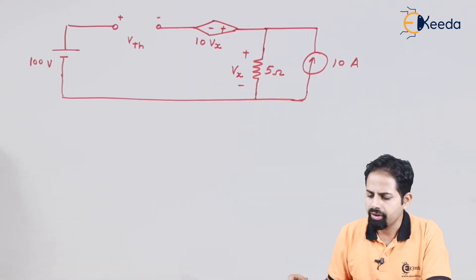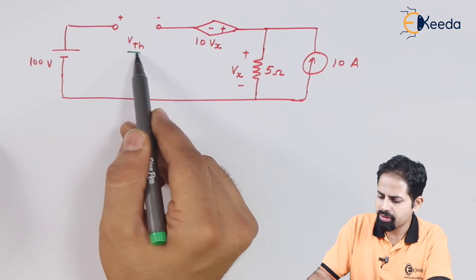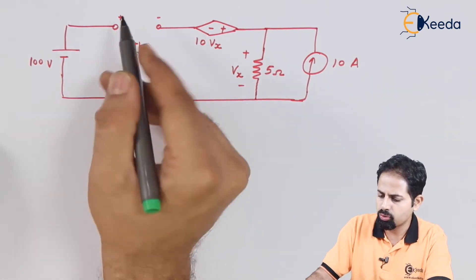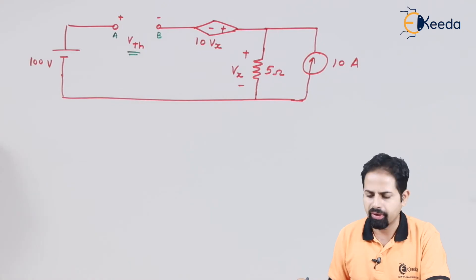I am going to redraw the circuit now. So here is the circuit. This resistance has been opened, it has been removed. And now we have to find Vth. That means this particular voltage across these two terminals. Let's give them name as A and B.